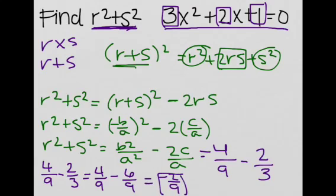So r squared plus s squared is equal to negative 2 ninths. This may be confusing because you might ask how a square can be negative. But remember, there are imaginary solutions, which can have negative squares. So negative 2 ninths is the solution.